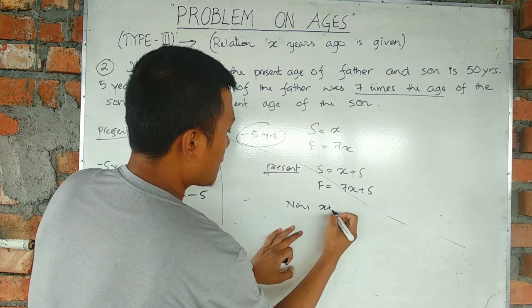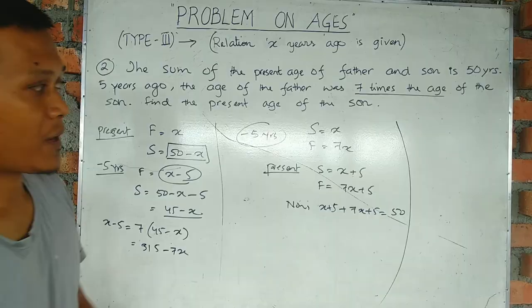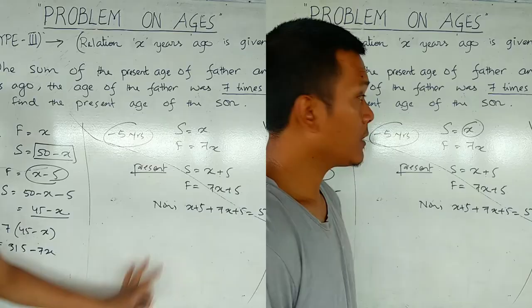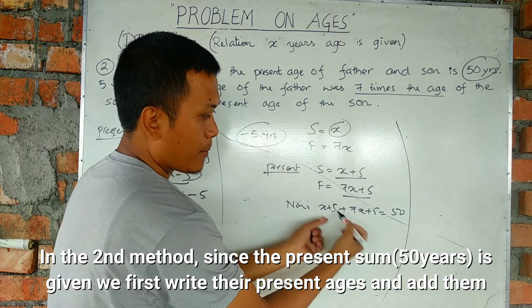The total is 50. x plus 5 plus 7x plus 5 equals 50. That's 8x plus 10 equals 50. Five years ago, x and 7x; present age we add 5. x plus 7x plus 10 equals 50.